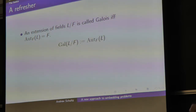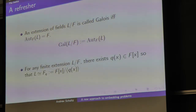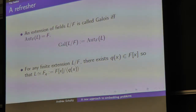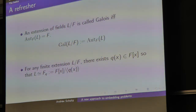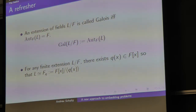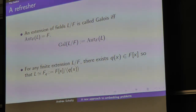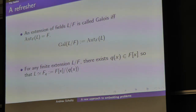When this happens, the Galois group is exactly those automorphisms of L that fix F. When you have a finite extension — meaning L is a finite vector space over F — then there exists some nice polynomial so that L is isomorphic to the polynomial ring over the base field quotiented by the ideal generated by that polynomial. Historically, it's better to think about the Galois group associated to a polynomial.